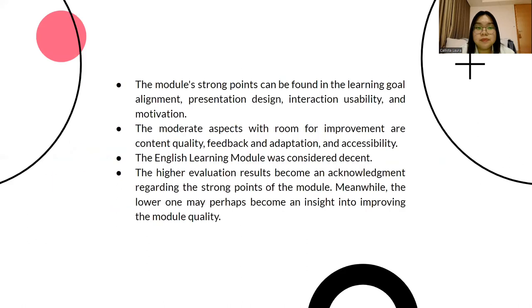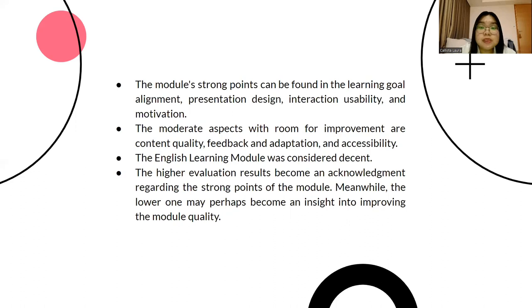In conclusion, the module's strong points can be found in learning goal alignment, presentation design, interaction usability, and motivation. The moderate aspects with room for improvement are content quality, feedback, adaptation, and accessibility. The English learning module was considered decent because it received a score of 4. Higher evaluation results can be an acknowledgement of the module's strong points, while lower results may become an insight into improving the module quality.